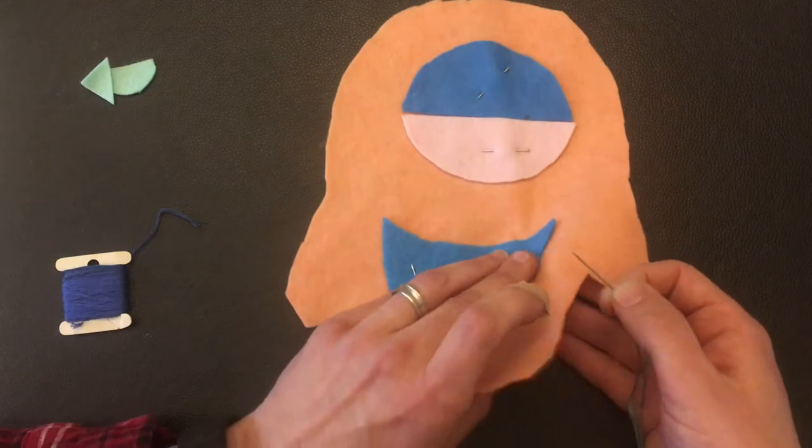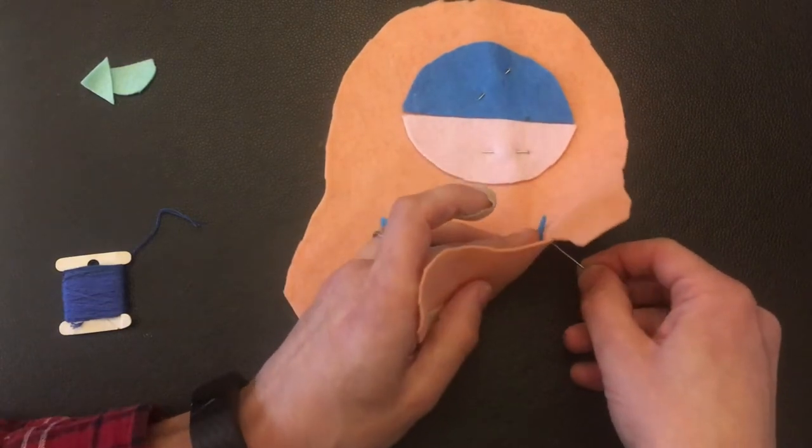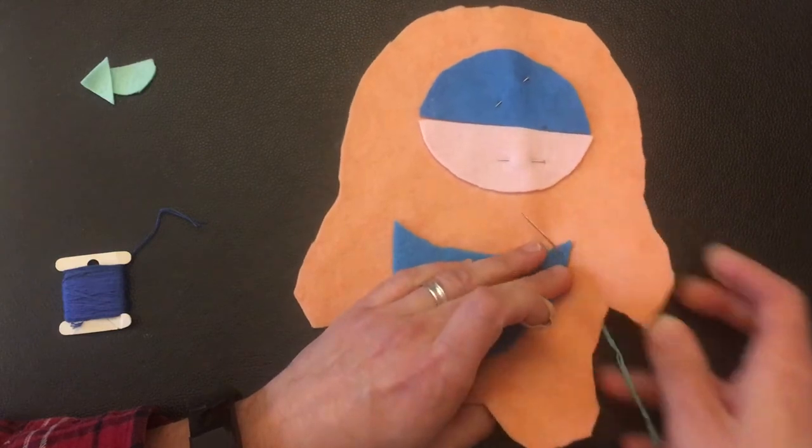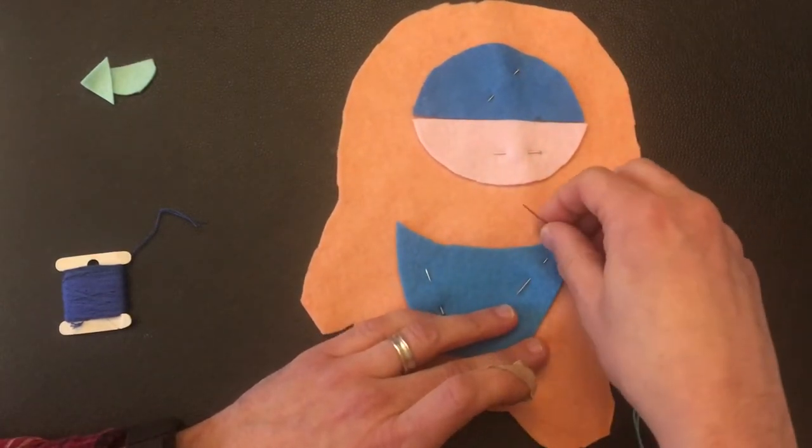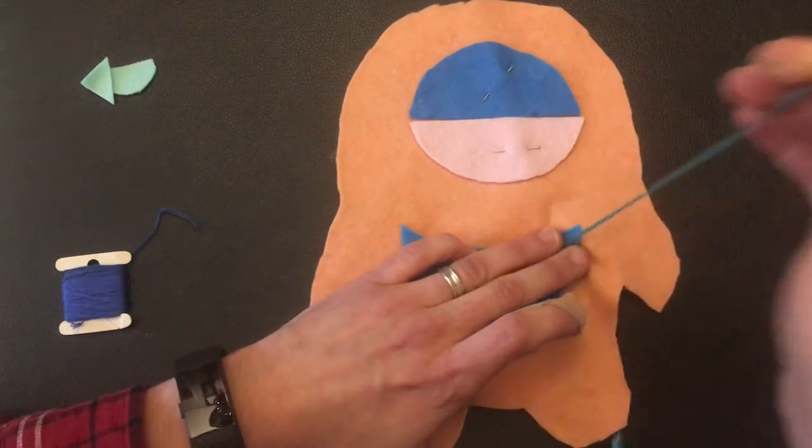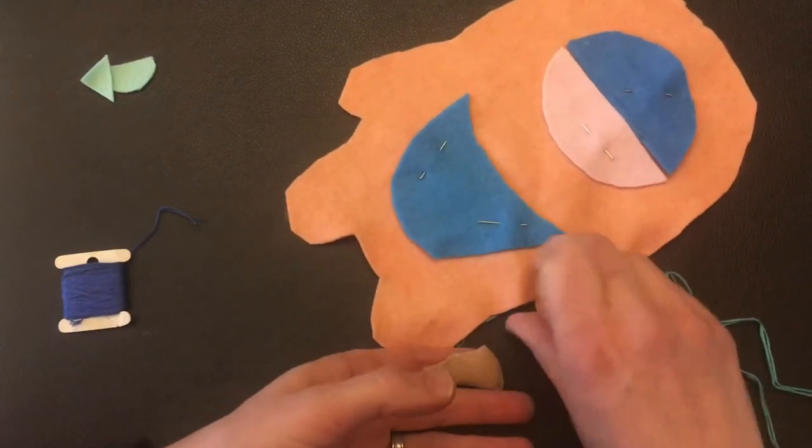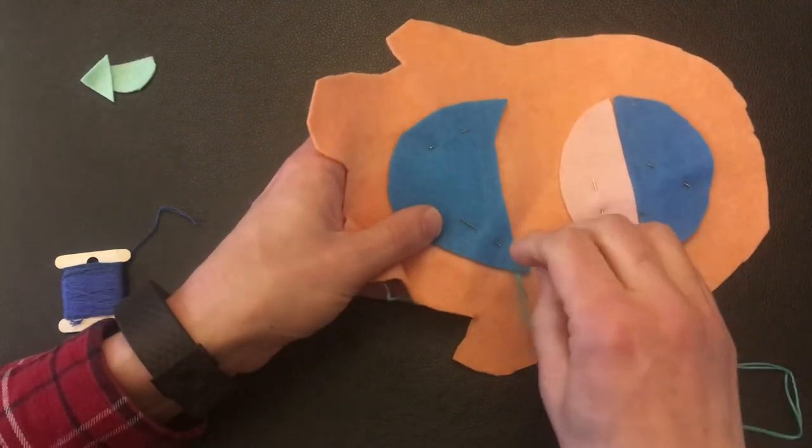I want to start underneath so that the knot is hidden inside that doll once we have all the stuffing in there. So I'm going to go here. I'm going to do my whip stitch which we have done in previous lessons, so basically you're just going to go around.